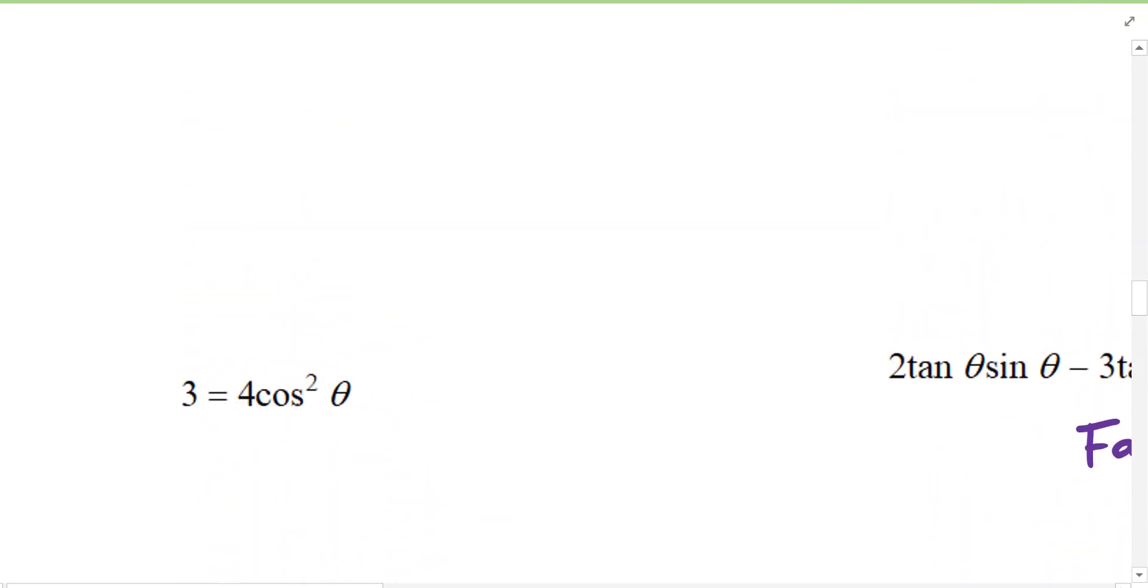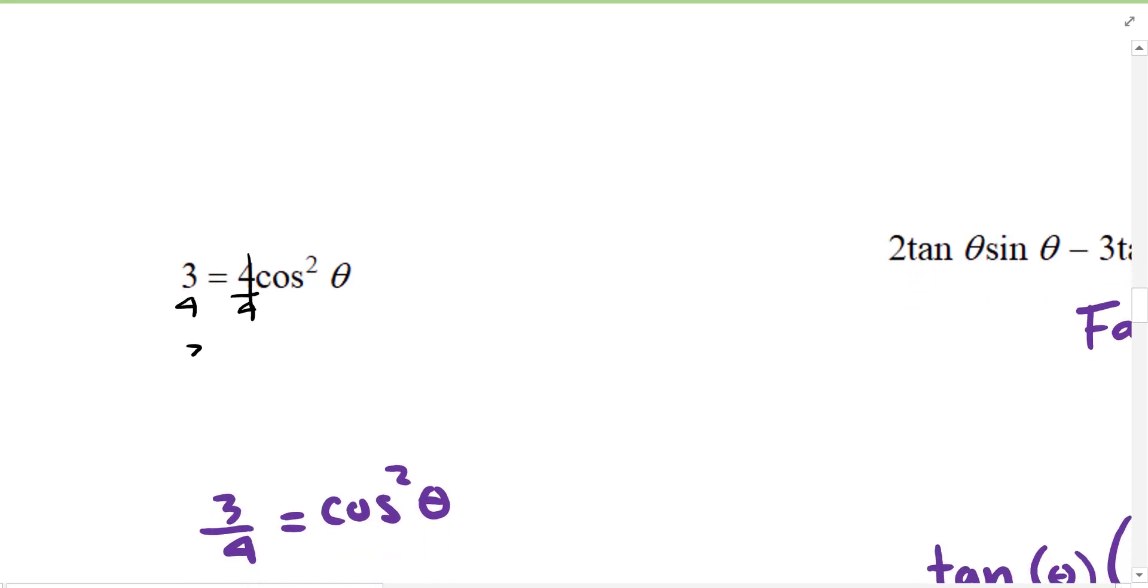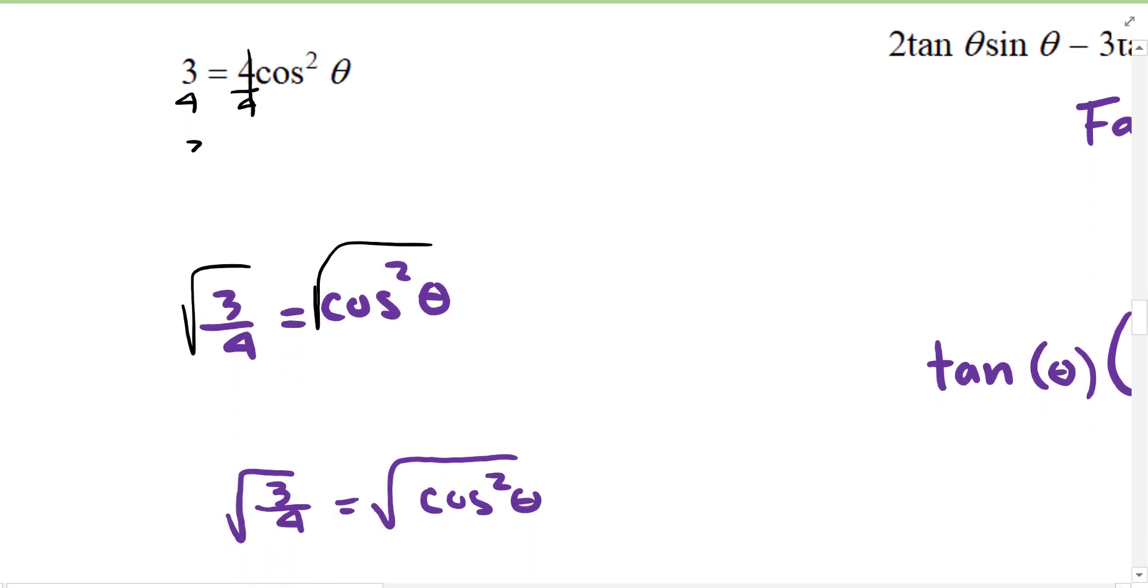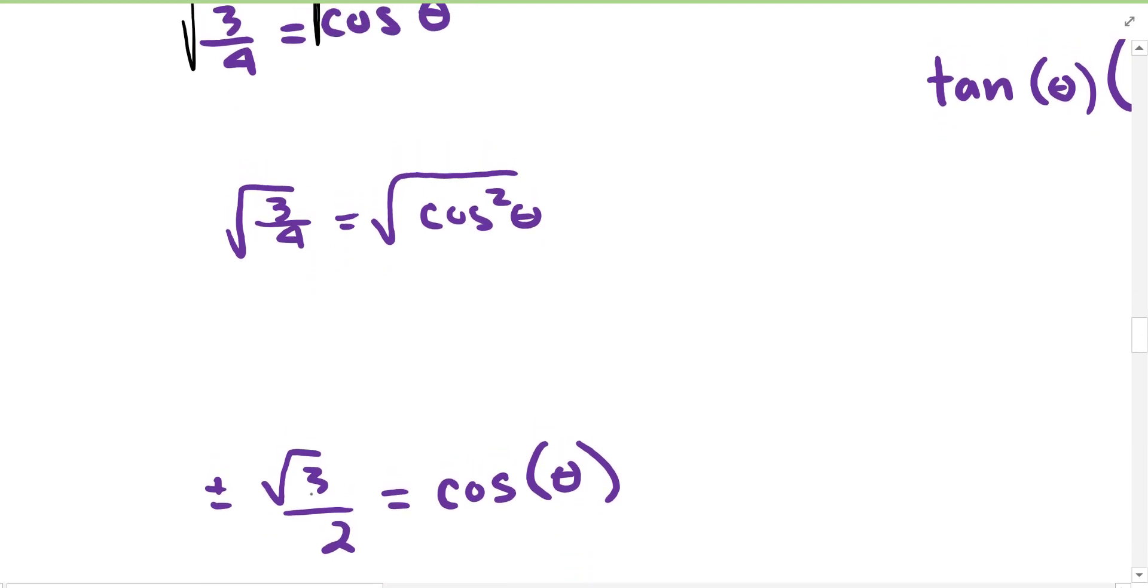Three is equal to four cosine squared theta. We're going to want to get the cosine squared theta by itself. We did that. Now you're going to want to take the square root of both sides. The square root of three is just three. Remember there's a positive and negative square root. The square root of four is two.